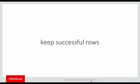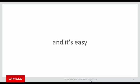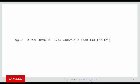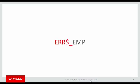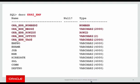DML error logging lets you keep the rows that loaded successfully, and not just skip or ignore the bad rows, but track them as part of the load process into an error logging table so that you can review them later. And it's easy to do. All we need is a preliminary step. We use the DBMS error log package to create an error logging table before running our load.